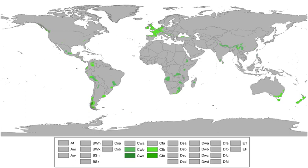Poleward of the latter is a zone of the subpolar oceanic climate, Köppen CFC, with long but relatively mild-for-their-latitude winters and cool and short summers with average temperatures of at least 10 degrees Celsius (50 degrees Fahrenheit) for 1 to 3 months. Examples of this climate include parts of coastal Iceland in the Northern Hemisphere and extreme southern Chile and Argentina in the Southern Hemisphere, including Ushuaia and Punta Arenas.